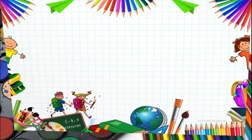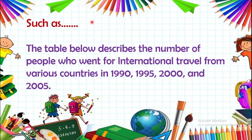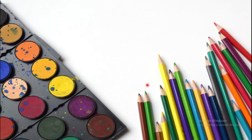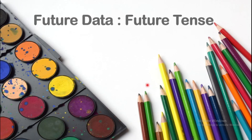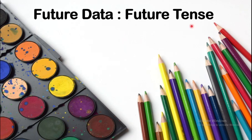For an instance, look at this statement: 'The table below describes the number of people who went for international travel from various countries in 1990, 1995, 2000, and 2005.' Here we can clearly see that the dates given are before the present year, therefore you should use the past tense.